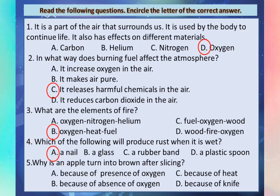Question 5: Why does an apple turn brown after slicing? A. Because of the presence of oxygen. B. Because of the absence of oxygen. C. Because of heat. D. Because of the knife. Answer: A. Because of the presence of oxygen.